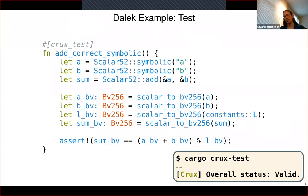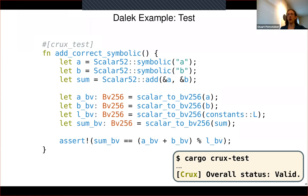If you take this test and run cargo crux-test, it will think about it for a while, building up a symbolic expression to send off to Z3 or some other solver. It will chew on that for a while and eventually conclude that it couldn't find a counterexample — so this is valid on all possible values of A and B.